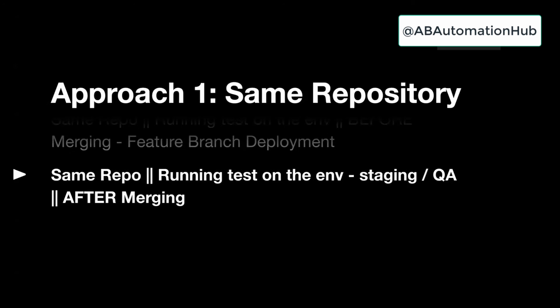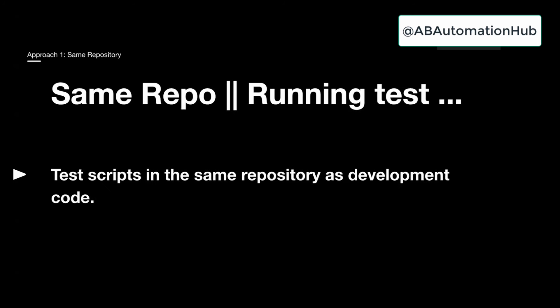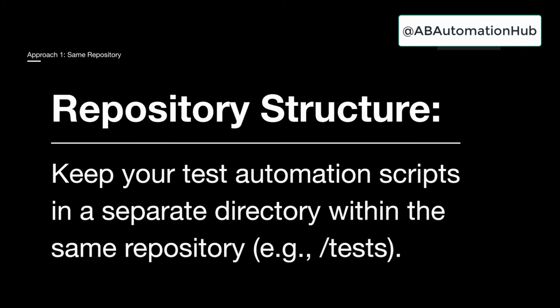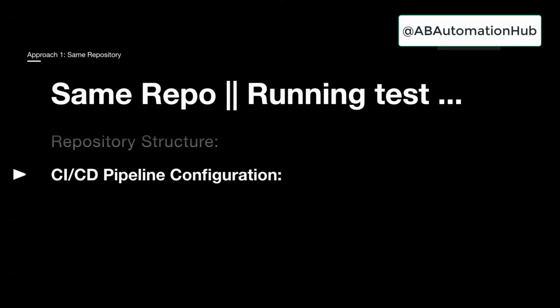Now comes the third sub-approach: again in the same repo, running your test cases on an environment like staging or QA — but this is after merging. This is an important concept not just for automation engineers but for developers too, ensuring end-to-end quality is maintained. Test scripts are in the same repository as the dev code, with test cases inside the test directory, but the CI/CD pipeline configuration would be slightly different.